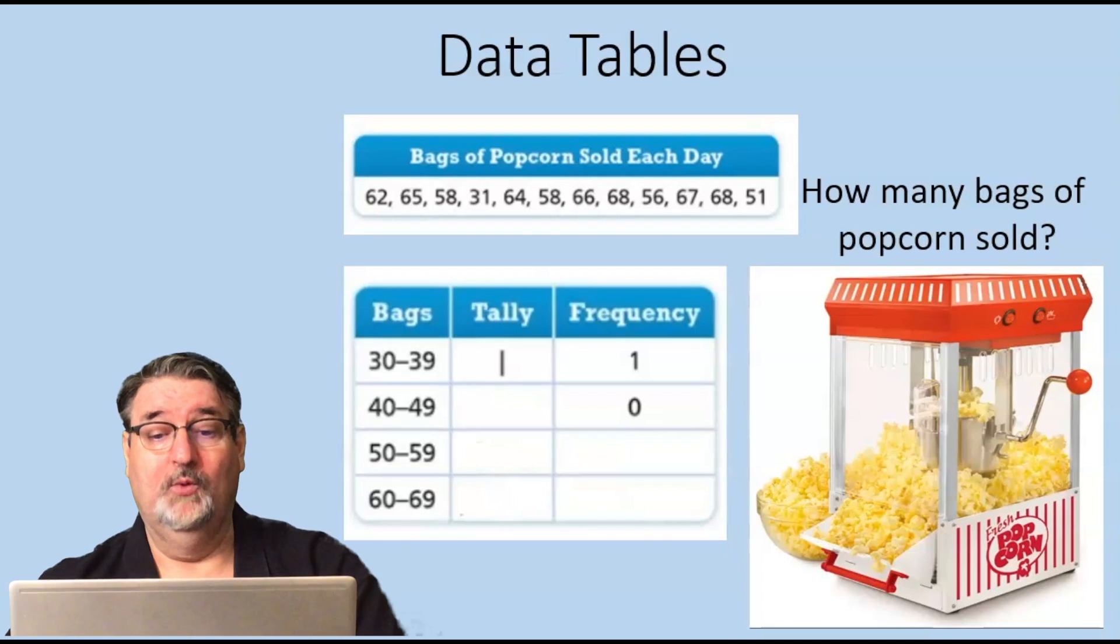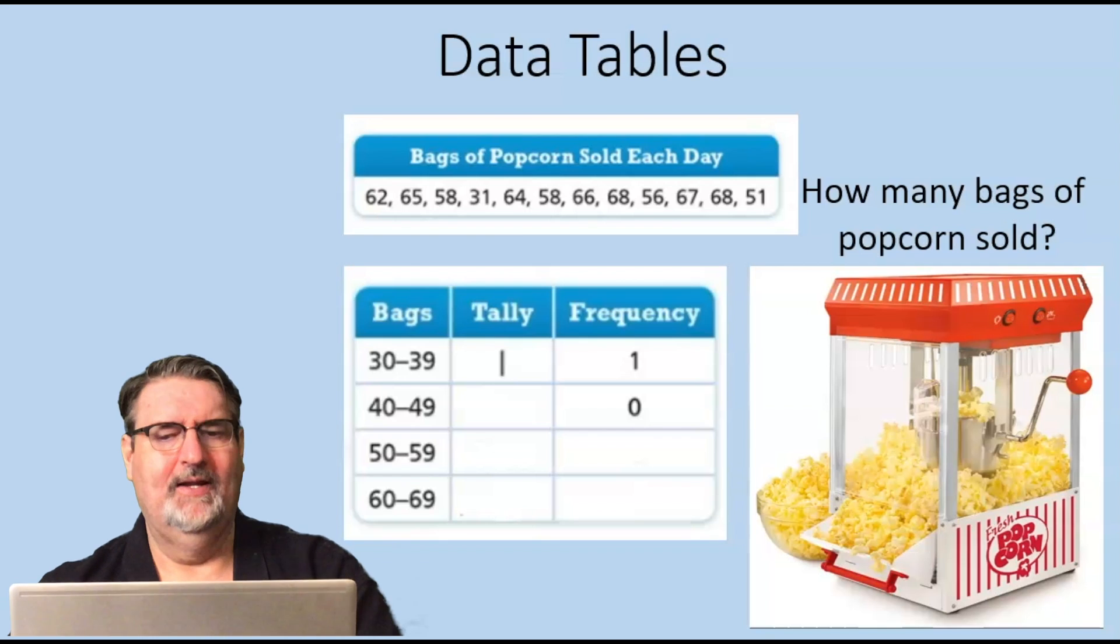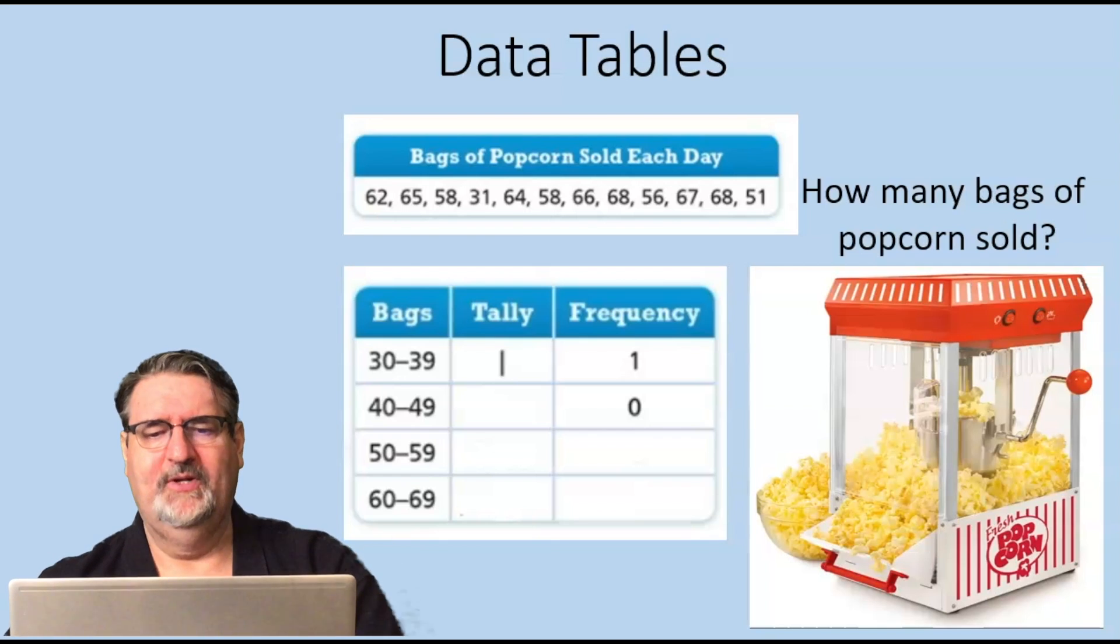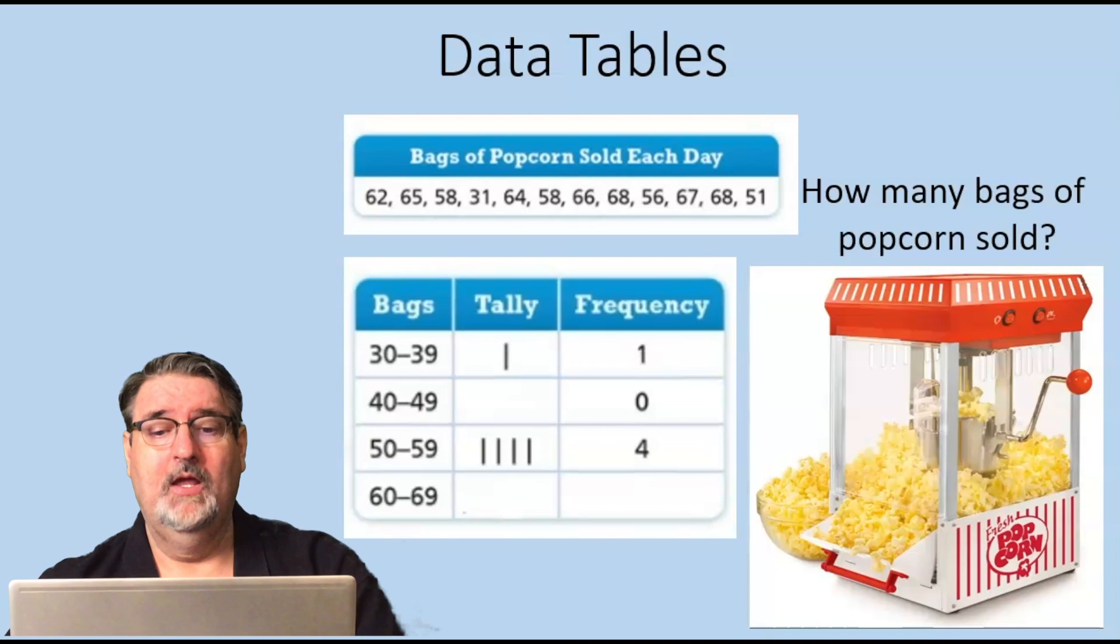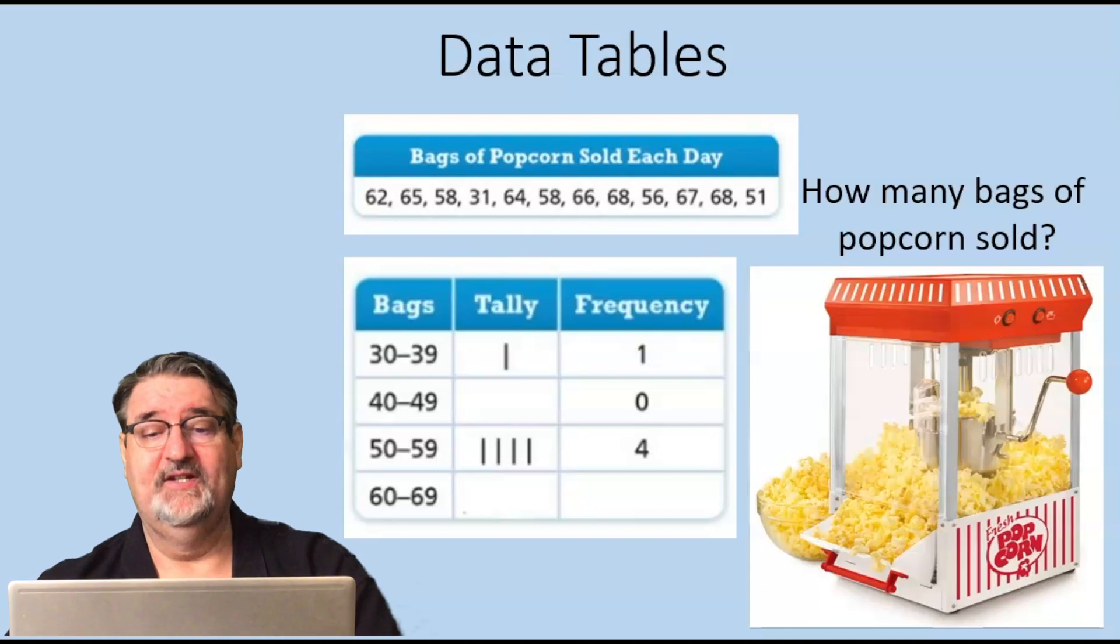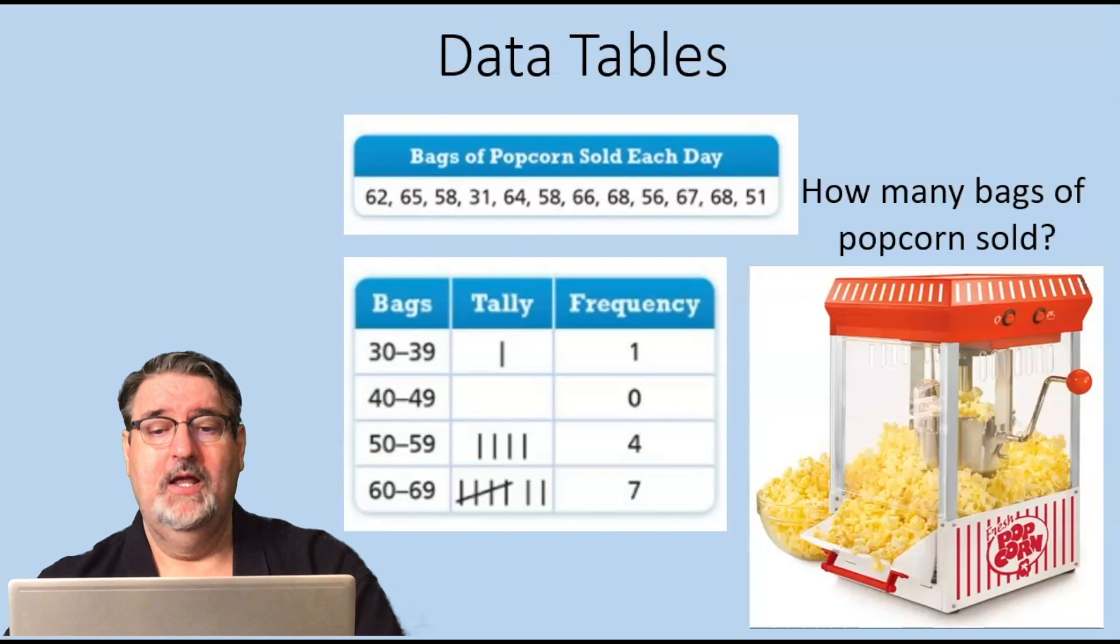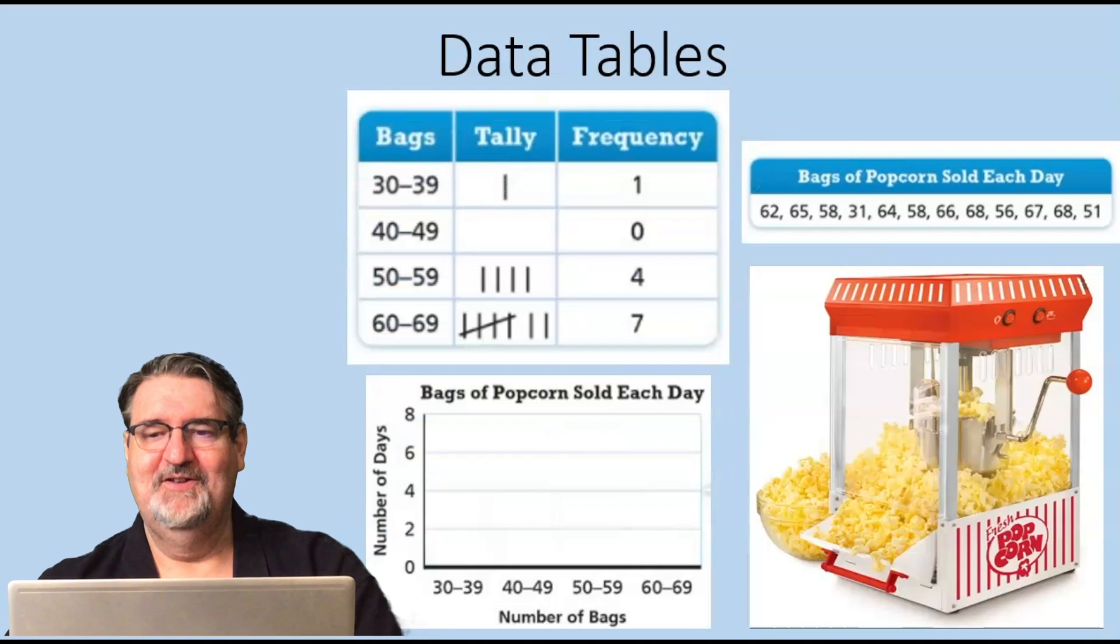On the second row it says 40 to 49 and there weren't any, so where it says frequency we put a zero. For 50 to 59 we counted four of them, so there's four tally marks and the frequency then is four. For 60 to 69 we counted seven, and so in the frequency it says seven.